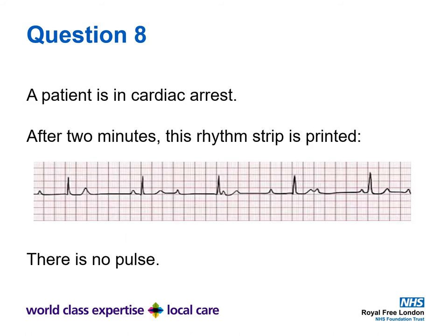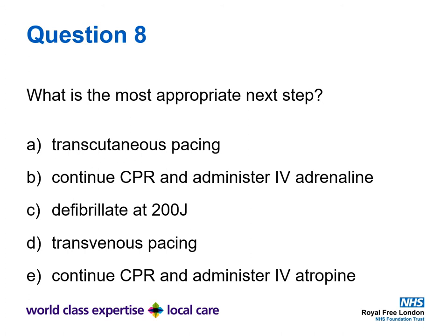Question eight. A patient is in cardiac arrest. After two minutes, this rhythm strip is printed and there remains no pulse. Take your time to look at the rhythm strip. What is the most appropriate next step? Is it A) transcutaneous pacing, B) continue chest compressions and administer IV adrenaline, C) defibrillate at 200 joules, D) transvenous pacing, or E) continue chest compressions and administer IV atropine?